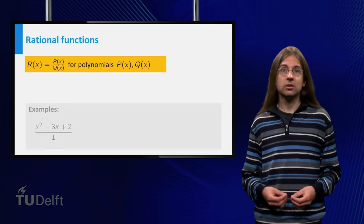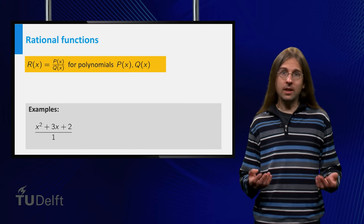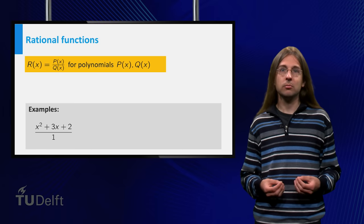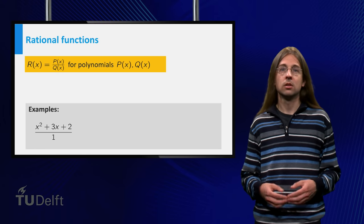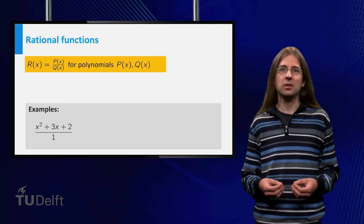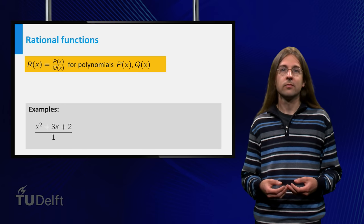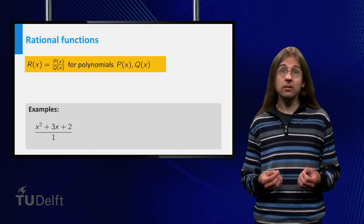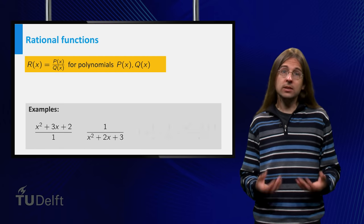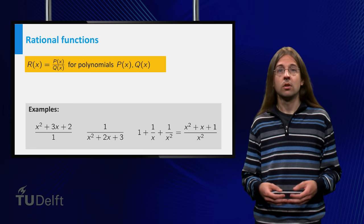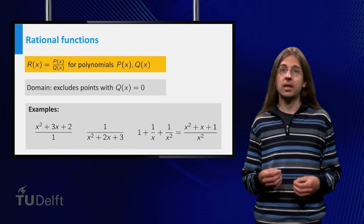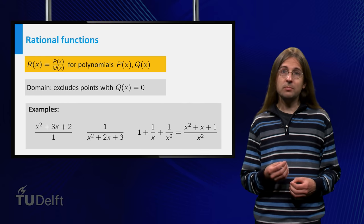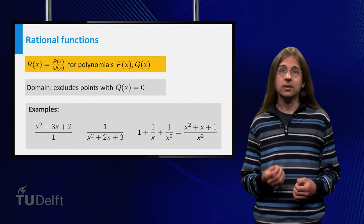Note that constant functions are also polynomials. So by taking the denominator to be the constant polynomial q equals 1, we see that any polynomial is also a rational function. Of course, those are not the rational functions that interest us in this video. You do get functions we could not define before, even in the simple cases where the numerator is constant or the denominator is just a power of x. Note that we cannot define a rational function at a point x where the denominator equals zero. This means that the zeros of the denominator are not in the domain of the function.